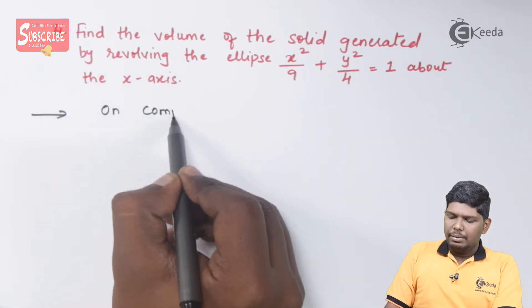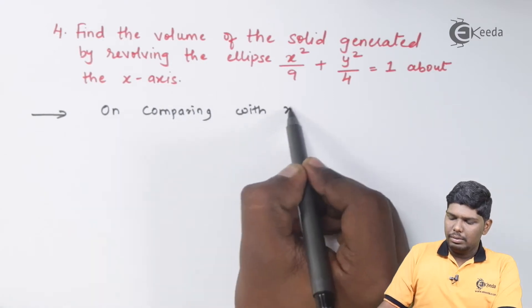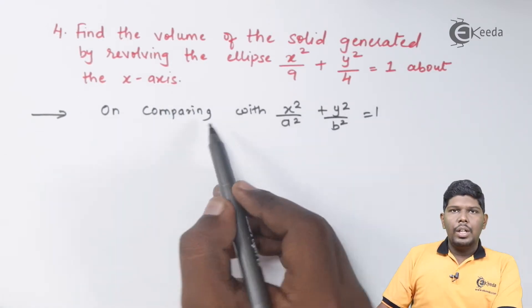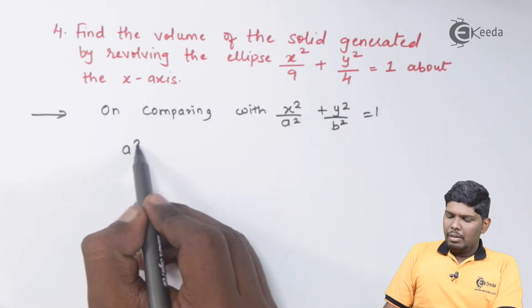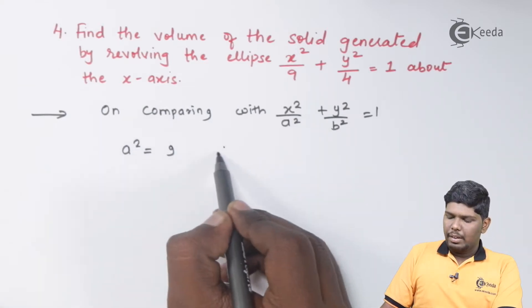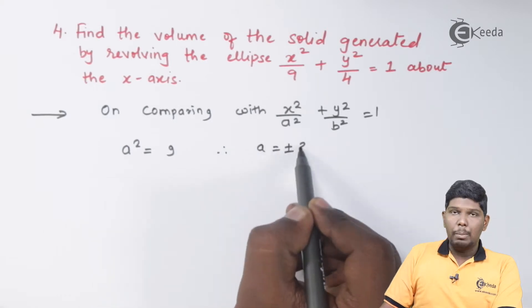On comparing with x²/a² + y²/b² = 1, the value of a² will be 9. Therefore, a will be plus or minus 3.